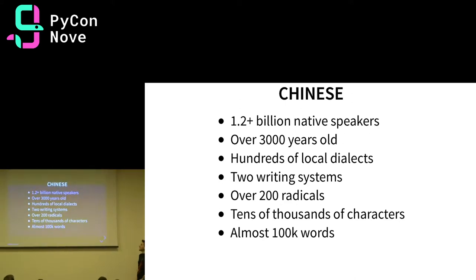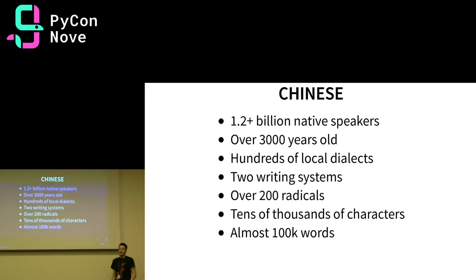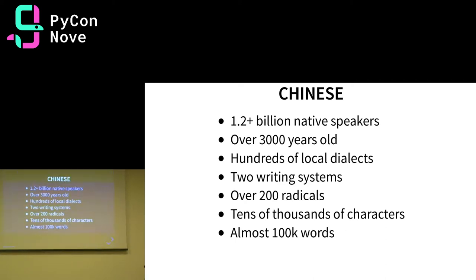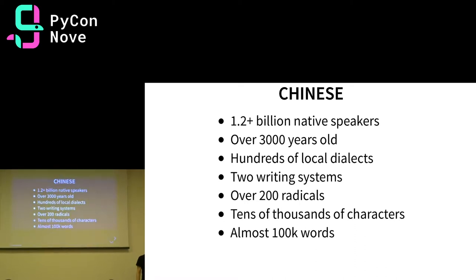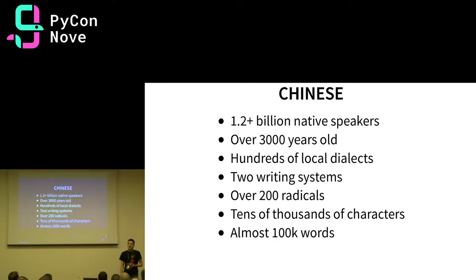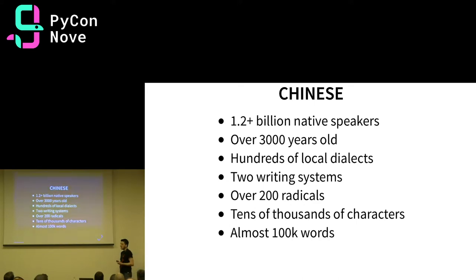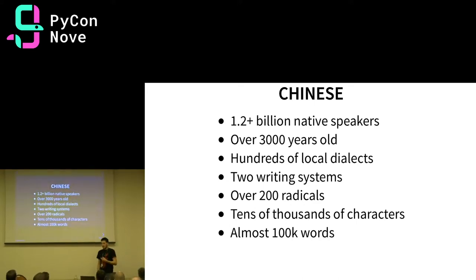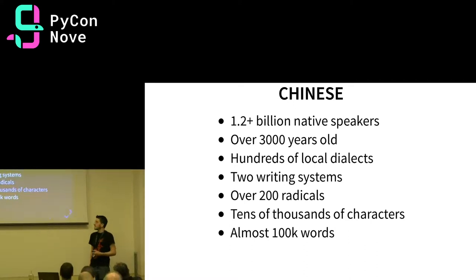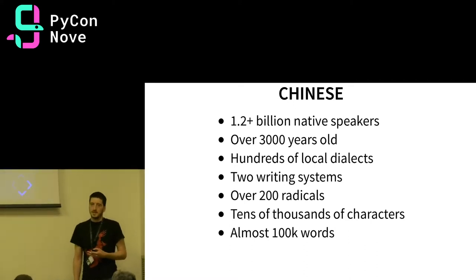If you don't know what Chinese is, it's the most widely used language in the world and it has 1.2 billion native speakers. It's over 3,000 years old and it has hundreds of local dialects, two writing systems, over 200 radicals, 10,000 characters and almost 100,000 words. So it seems quite complicated, and many people consider Chinese to be one of the most difficult languages to learn. But it's actually not that difficult, and hopefully after this talk you'll have an idea of how Chinese works.